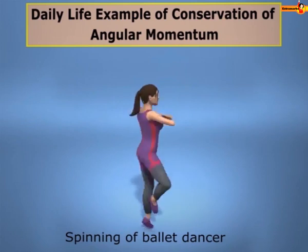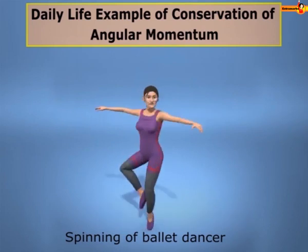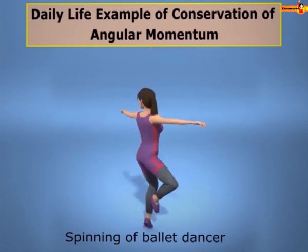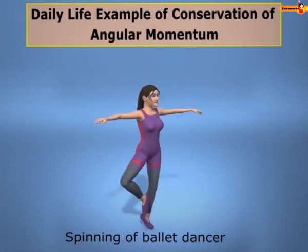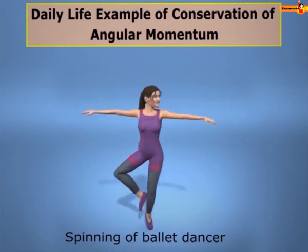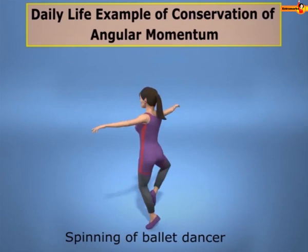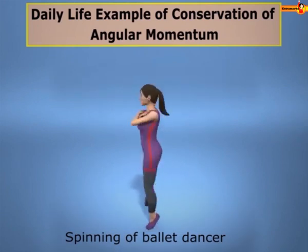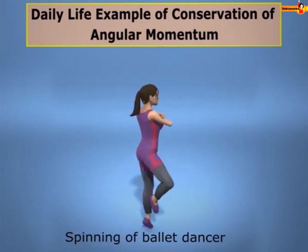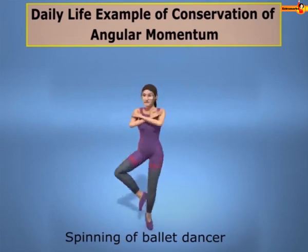When she pulls her arms closer to her body, her rotation becomes faster. This happens because when she stretches her arms, her mass is at a larger distance from the axis of rotation, increasing the moment of inertia. Since no external torque is acting, angular momentum is conserved, so angular speed decreases. Similarly, when she pulls her arms close, the moment of inertia decreases and angular velocity increases.